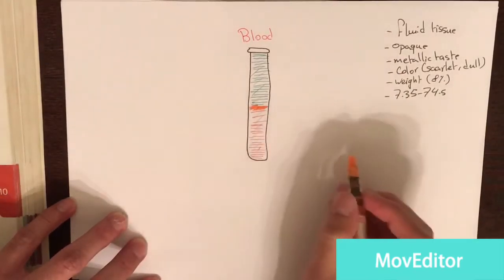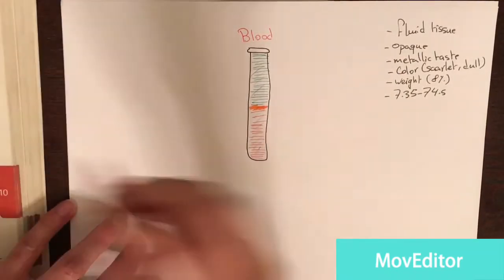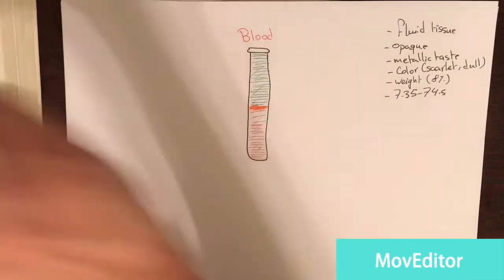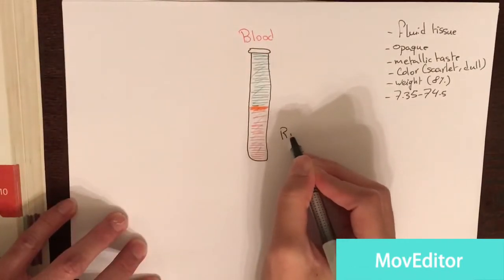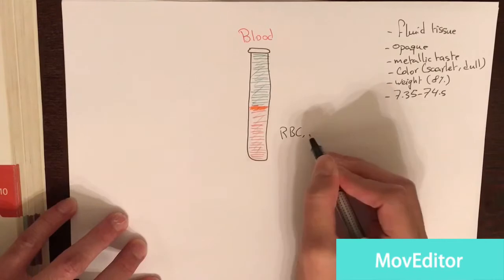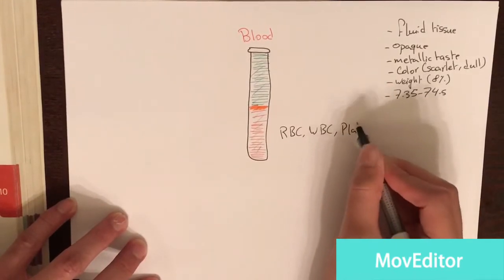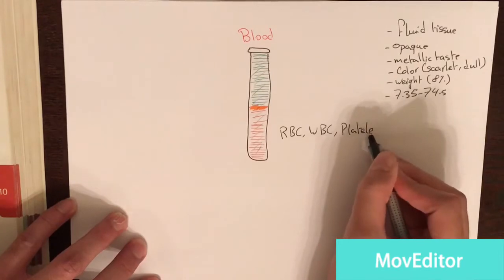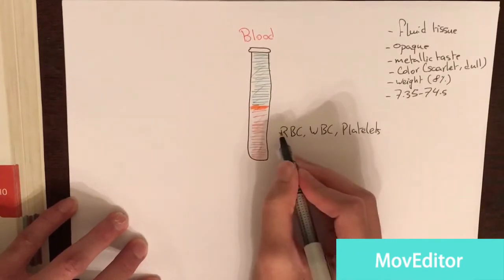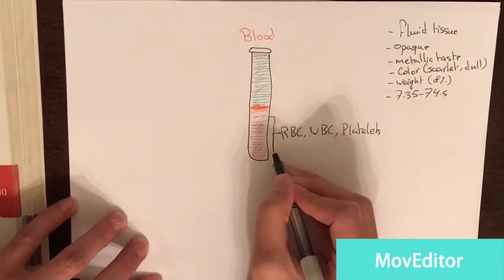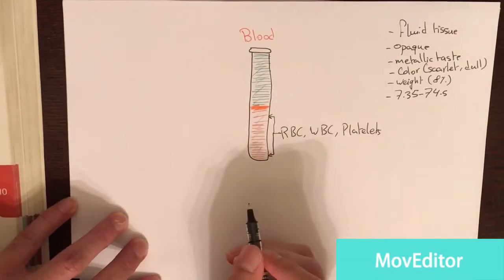The solid part is consisted of red blood cells, white blood cells, and platelets. Red blood cells is all of this. And this part is also known as the hematocrit.